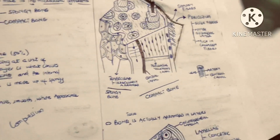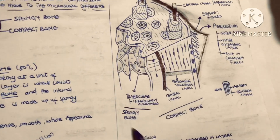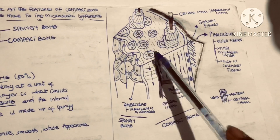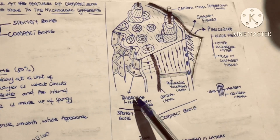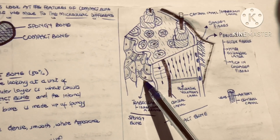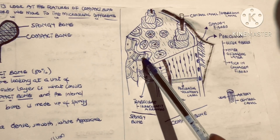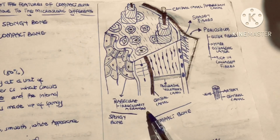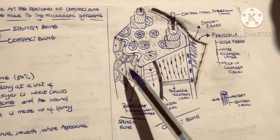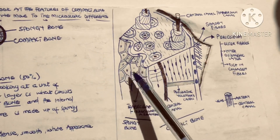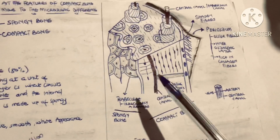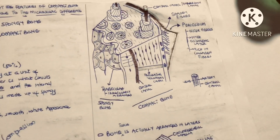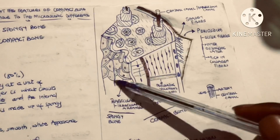Now let's move to the spongy bone. Unlike the compact bone, the spongy bone does not contain osteons. It rather has trabeculae — you can see those land-line structures here. They are the trabeculae, irregularly arranged, and within them are spaces that make the spongy bone porous.